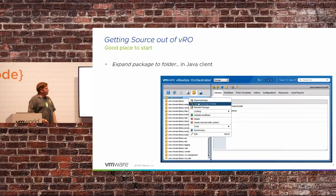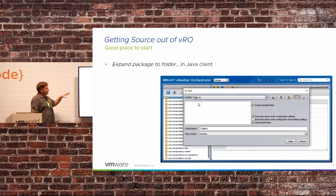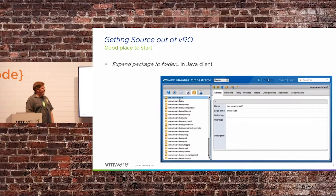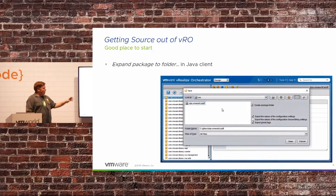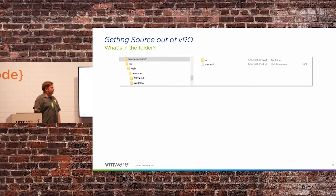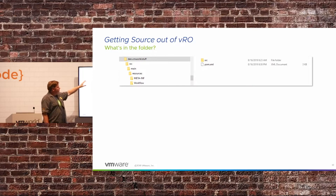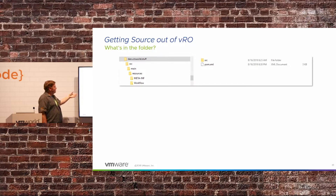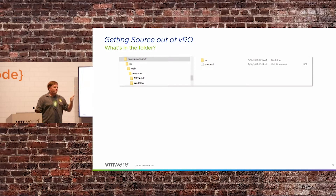So how do you start with this within VRO? The easiest way is to start with the Java client, take your package, right-click, go to 'expand as package,' and it will create a folder of all your content as source. In that folder you'll get a source folder and a main folder. Within the root folder you'll have a POM file that describes the package. And within the resources folder you'll have all the content — workflows, actions, config elements, resource elements — all exported there.